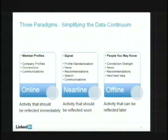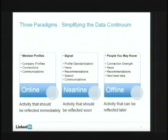People You May Know doesn't have to be done right away, which leads into how we reason about the data ecosystem. These three products fit nicely into a three-bucket paradigm: online — activity that should be reflected immediately, like member profiles; nearline — stream processing activity that should be reflected soon, like Twitter updates; and offline — activity that can be reflected later, where you sacrifice latency for throughput in large-scale batch computation. People You May Know is a classic example of the offline model.